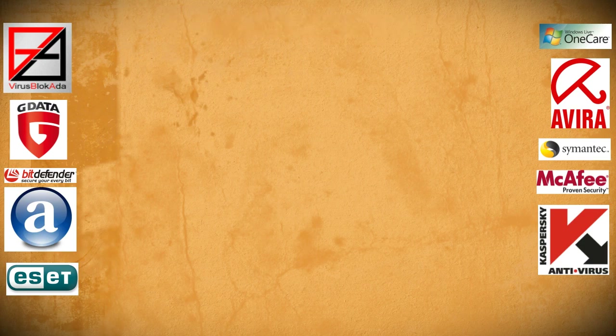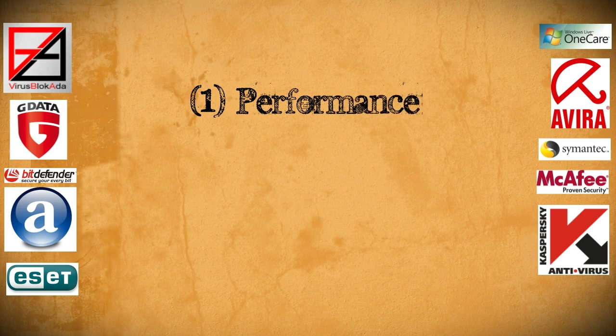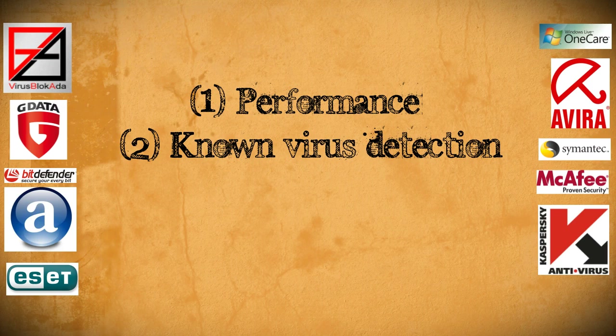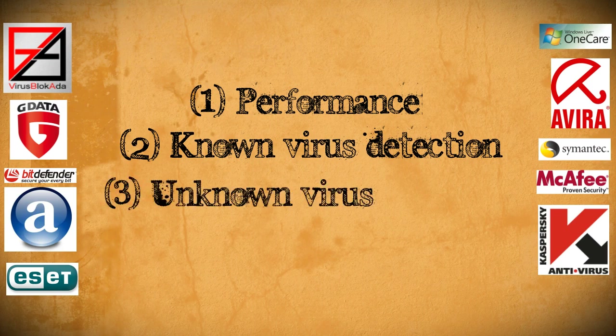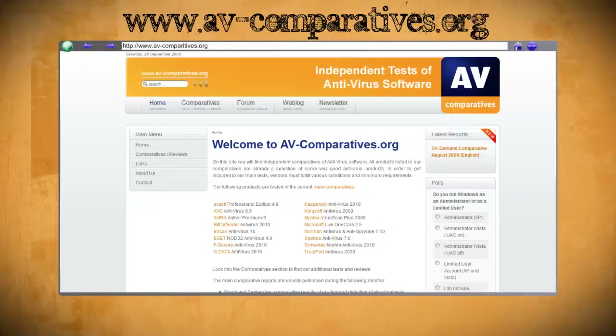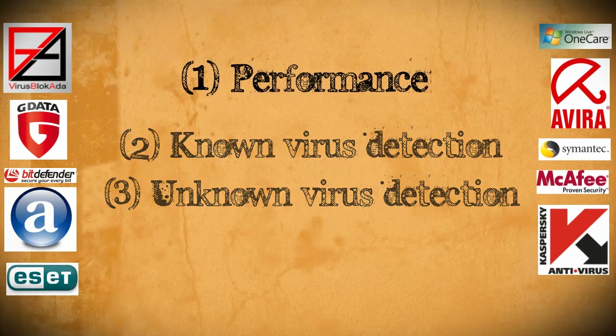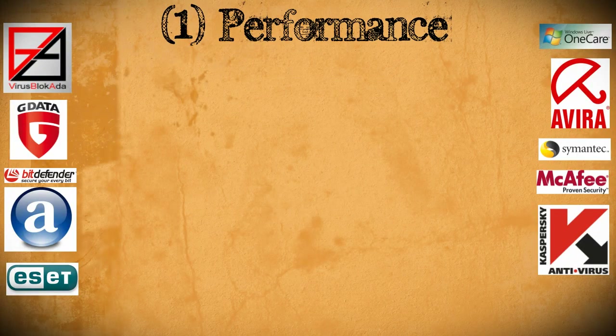When choosing an antivirus program, there are three main things to look at: one, performance — or how badly it slows down your computer; two, known virus detection — or how accurately it identifies known threats; and three, unknown virus detection — or how accurately it identifies unknown threats. You can find the test results that I'm basing these statistics on at www.av-comparatives.org.